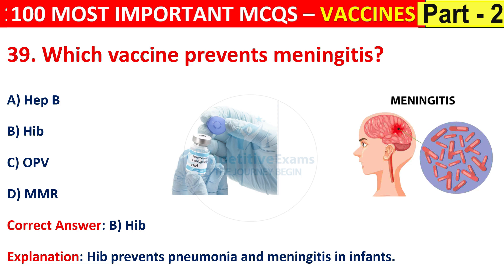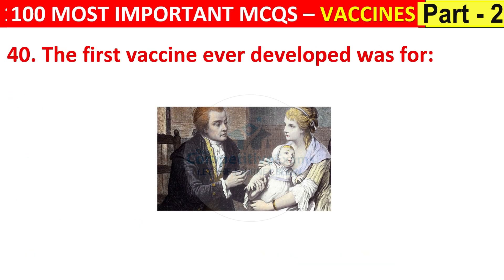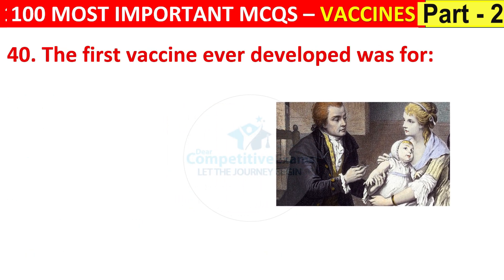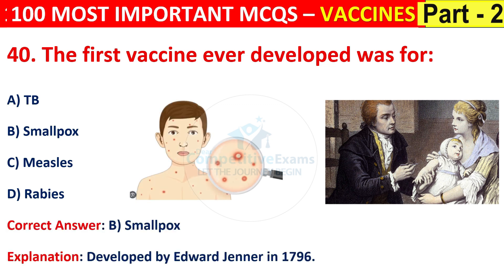Question number 40. The first vaccine ever developed was for TB, smallpox, measles, or rabies. The right answer is B, that is smallpox. Smallpox vaccine was developed by Edward Jenner in 1796.